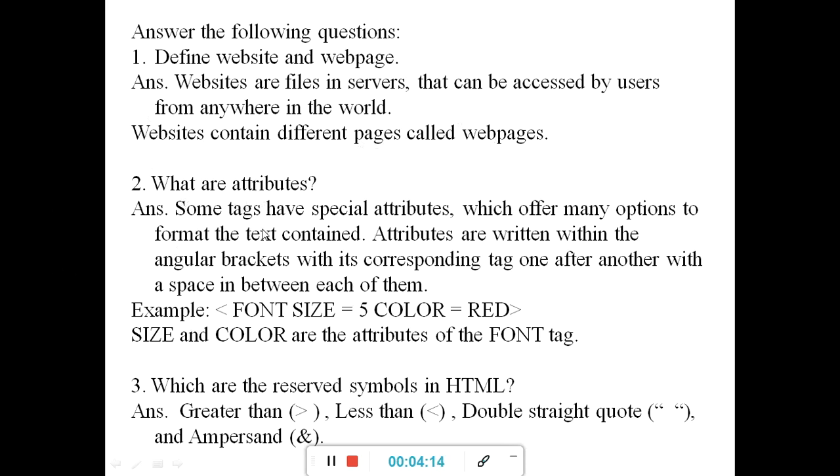What are attributes? Some tags have special attributes which give options to format the text contained. There are different attributes for different tags. How are these attributes written? Attributes are written within the angular brackets with its corresponding tag one after another with space in between each of them. See over here I have given an example: font tag. Over here you can see size and color. Here size is given 5 and color is equal to red. That means font size is 5 and font color is red. Size and color are the attributes of the font tag. 5 and red are the values of these attributes.